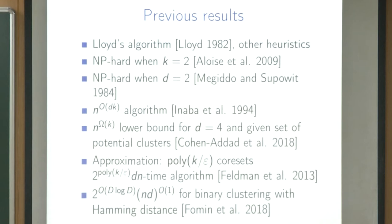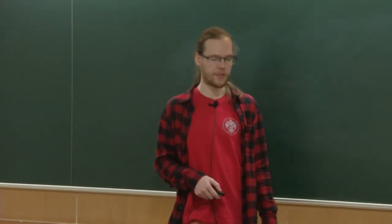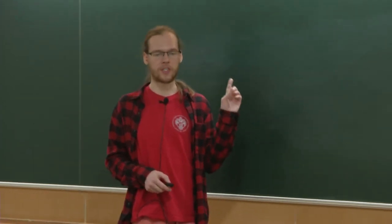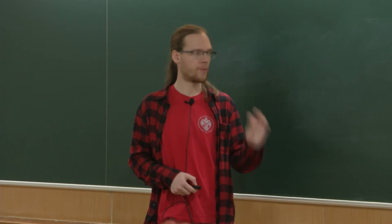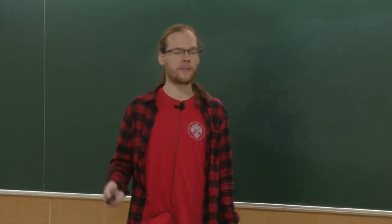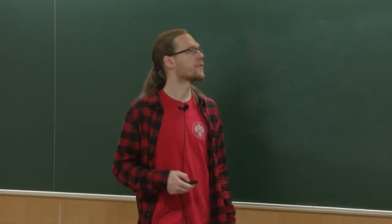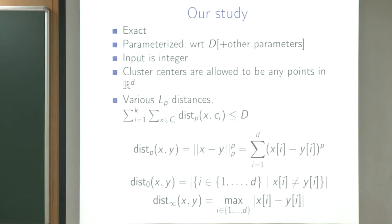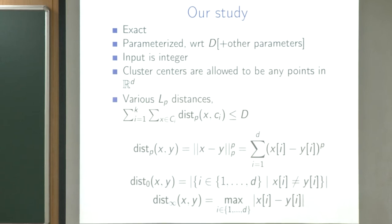This presentation gives the problem more of an editing flavor. We have some data set that we know is close to the actual clustering of the points, but there are a small number D of mistakes, and we have to correct it to make it into a real clustering. This will also be the setting of our work. In our study, we focus on the exact version of the problem — we don't allow any approximation — and we parameterize with respect to D, plus maybe some other parameters.